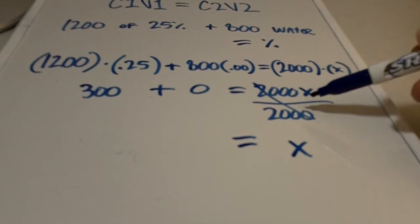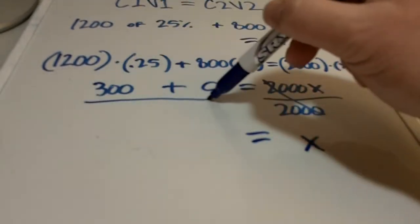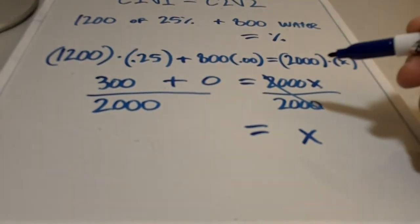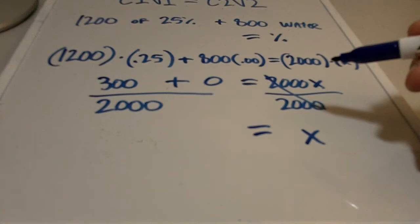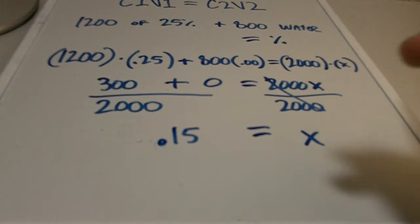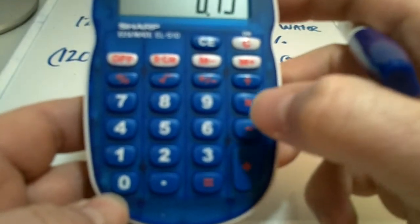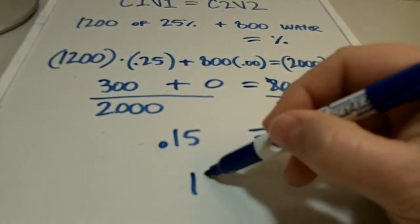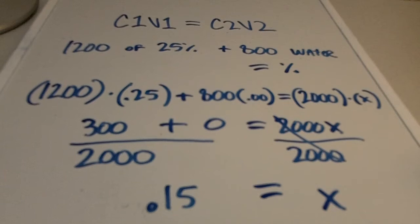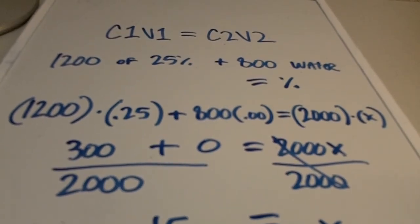And so we'll go ahead and do that. And those cross each other out. And remember, if we do it on this side, we have to do it on this side. So we'll take that number over there, divide it by 2000. And what that gives us is 0.15. So we've got 300 divided by 2000. That's right, 0.15. So we have 15% is the answer. So that is how you work out a C1V1 equals C2V2 equation.